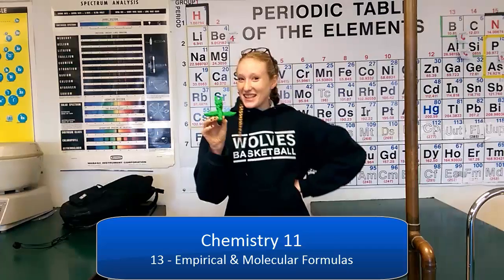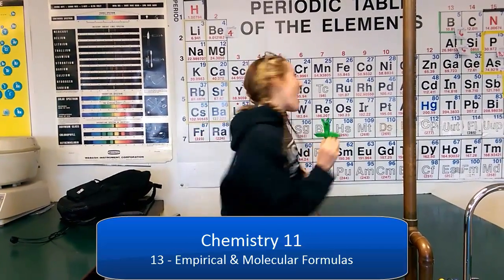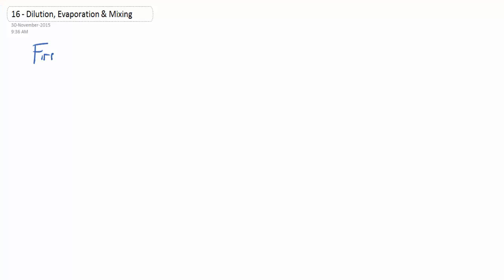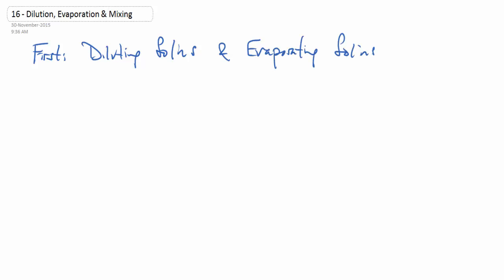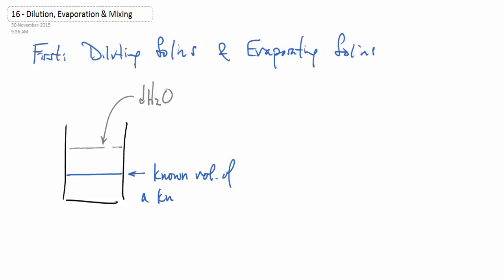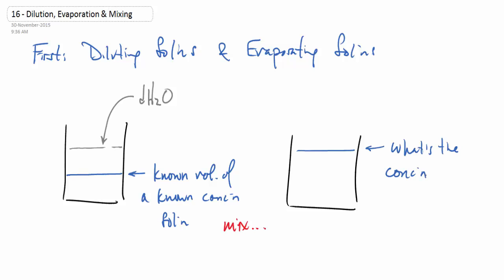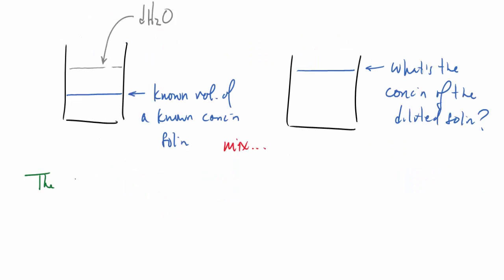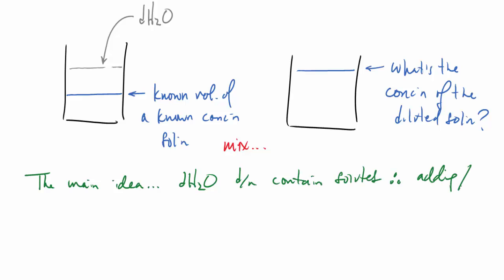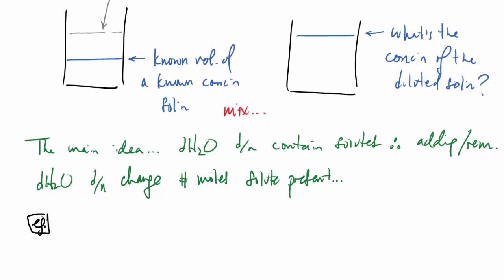Today's lesson is on dilution, evaporation, and mixing. When diluting solutions, we add a known volume of distilled water to a known concentration of solution and mix. The key idea is that distilled water doesn't contain solutes, so adding or removing distilled water doesn't change the number of moles of solute present in the solution.